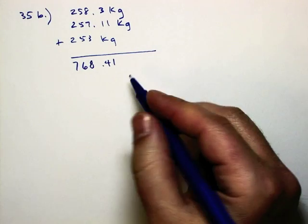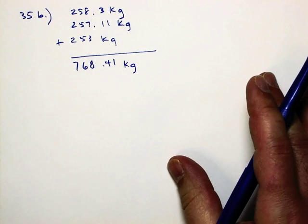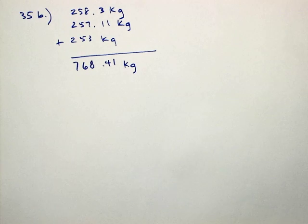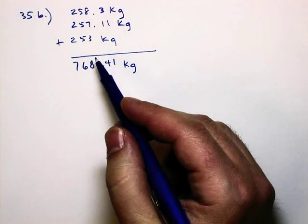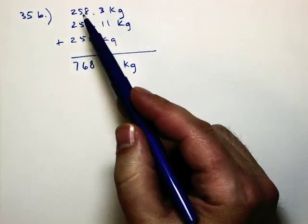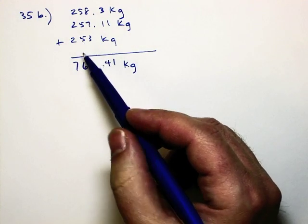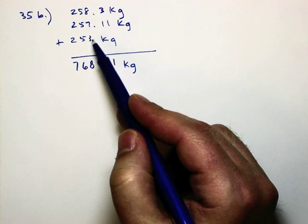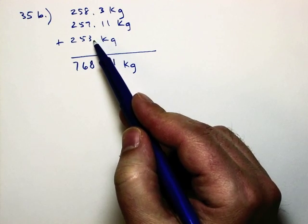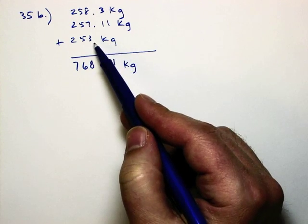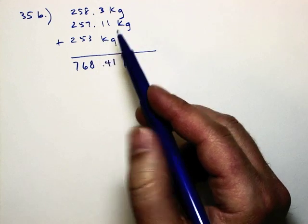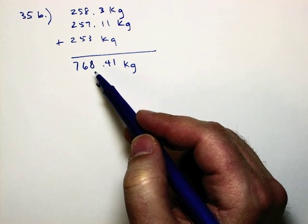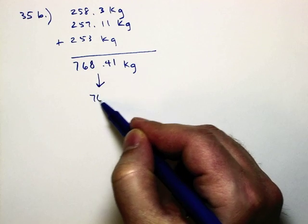So we got 768.41 kilograms. Now the rule stated that we can only leave our measurement as far to the right of the decimal point as the initial value that had the least amount of digits past the decimal point. So of these, top, middle, and bottom, who had the least amount of digits past the decimal point?